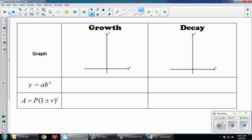Growth is when we are increasing, so I have a graph that looks like this because b is bigger than 1. Decay is when I have a decreasing function, so it looks like that, because b is between 0 and 1.